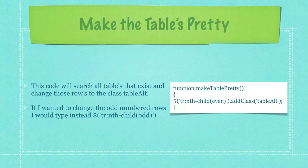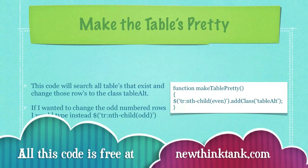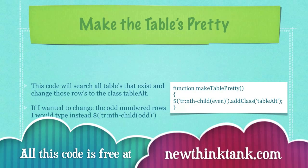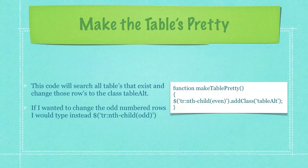This bit of code will search all tables that exist and change those rows to the class table alt. If I however wanted to change the odd numbered rows, I would just simply replace even with the word odd as I show here.